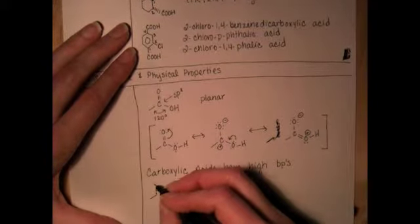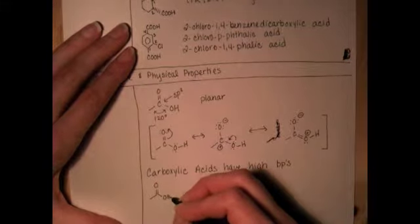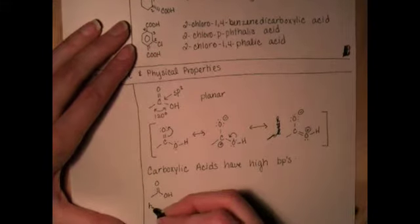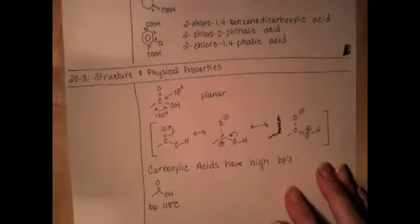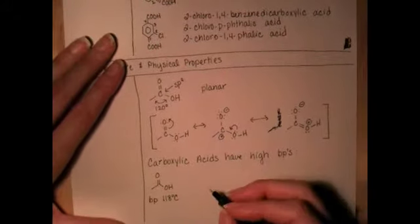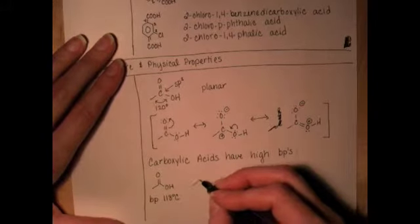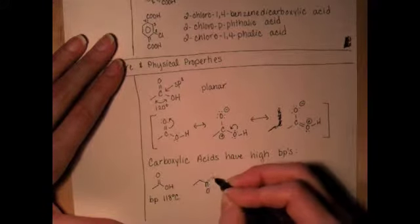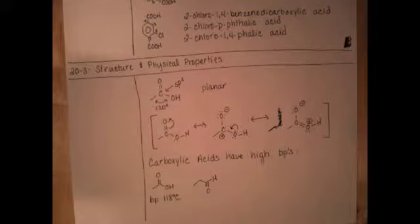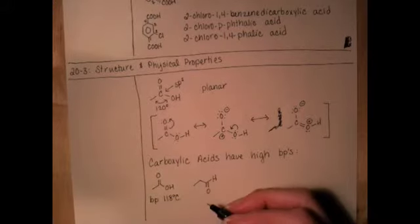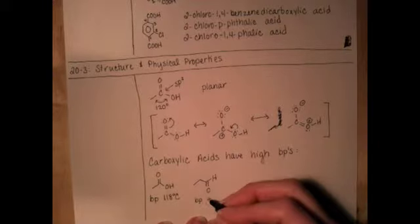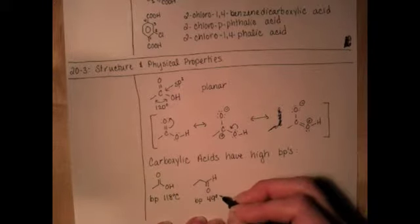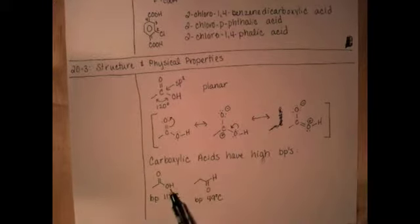So for example, acetic acid or ethanoic acid has a boiling point of 118 degrees Celsius, and you can compare that to a molecule with pretty much the same molecular weight. These molecules are pretty close in terms of molecular weight, but with no hydrogen bonding, this aldehyde has a boiling point of 49 degrees C. So the hydrogen bonding of the OH group does make a difference in terms of increasing its boiling point - it's got stronger intermolecular forces.